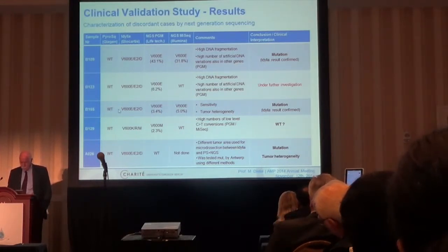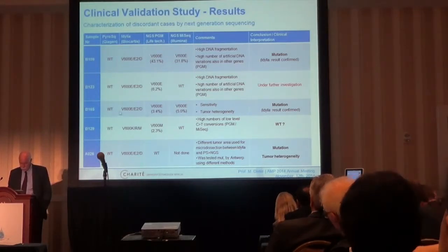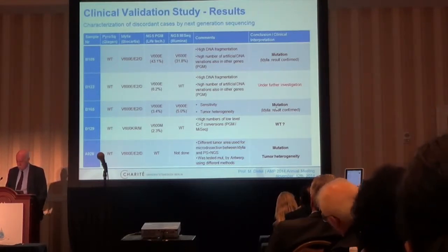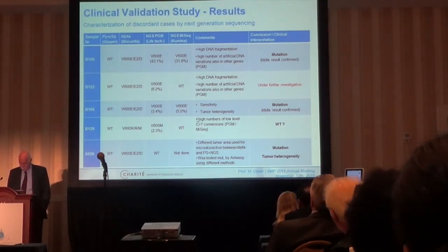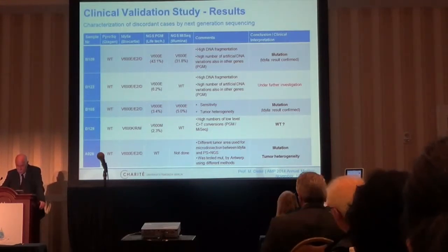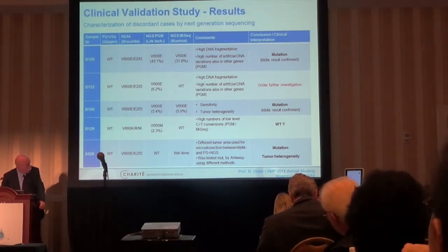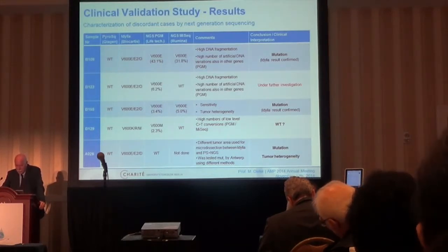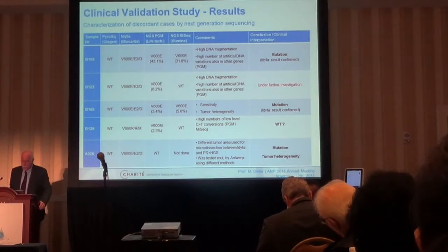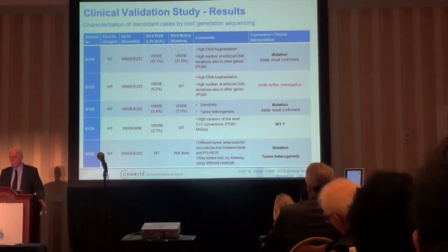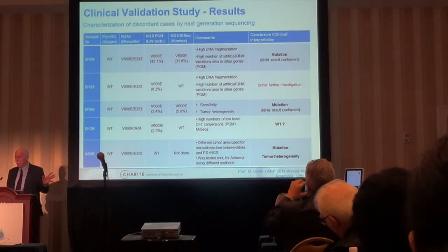The third case: again wild-type by pyrosequencing, mutated by all other techniques — so the mutation should have been diagnosed, which was not the case. Here it becomes very clear that the sensitivity of the two assays and the two methods is different. In the fourth case — B129 — again wild-type by pyrosequencing, IDYLLA and NGS mutated, but next-generation sequencing with Illumina showed wild-type. However, this percentage of 2.3% is very low, and if you set the threshold to 5% it would also be wild-type.